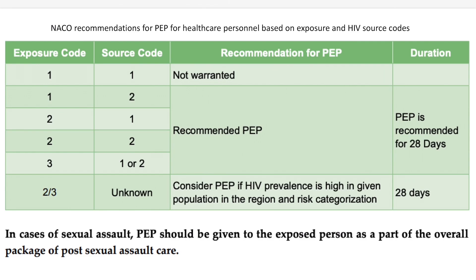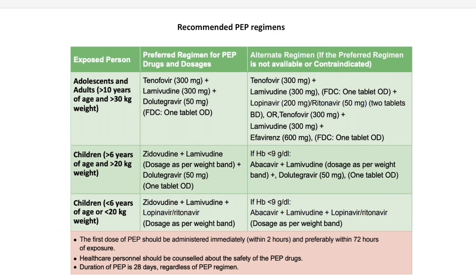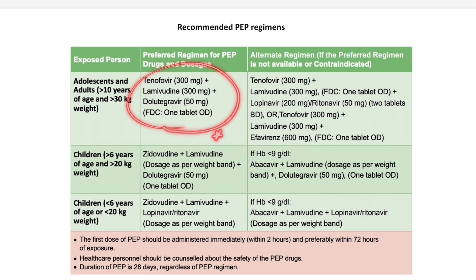Now, what are the drugs used in PEP regimens? They tend to change over time — 2014 guidelines differ from Harrison's, and NACO guidelines also differ, as new drugs evolve. When in doubt, always consult an infectious medicine specialist. As per 2021 guidelines, for adults with age more than 10 years and weight more than 30 kg, the preferred regimen is Tenofovir + Lamivudine + Dolutegravir.